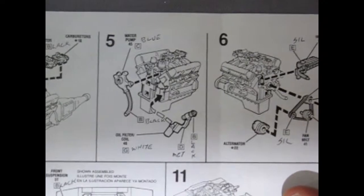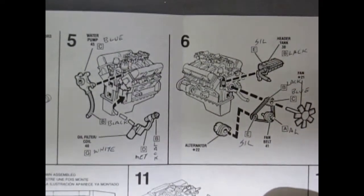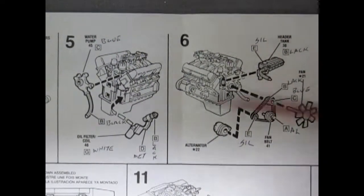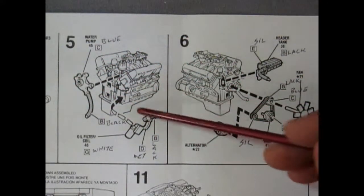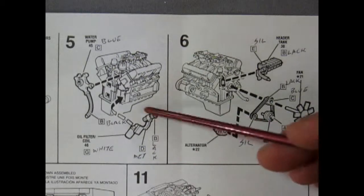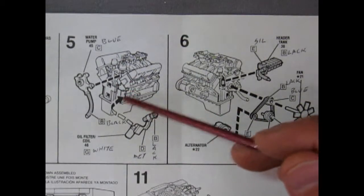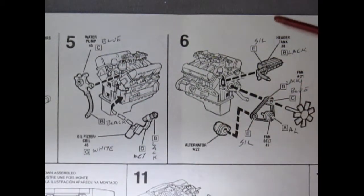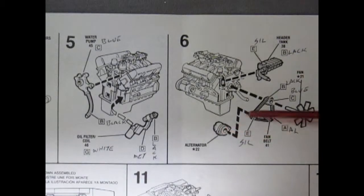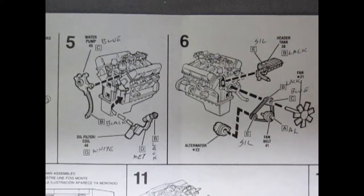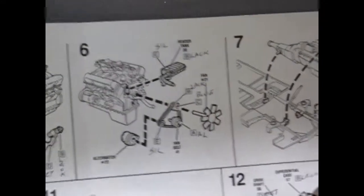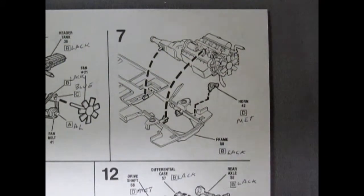Number five shows the water pump going on here. This is our oil filter and the coil up here. It glues into the front of the big block. Then you have your alternator, your fan belt, and the fan.